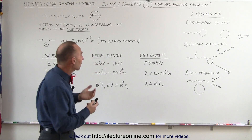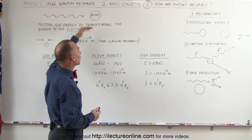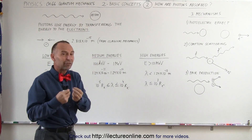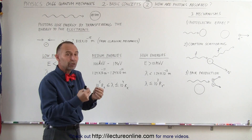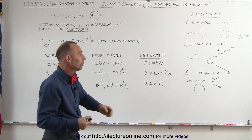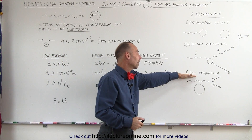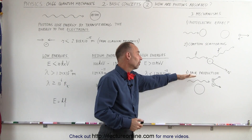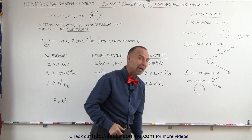Finally, if the photon has a very high amount of energy — enough to produce matter — then we can have pair production, where energy from the photon is converted directly into matter.